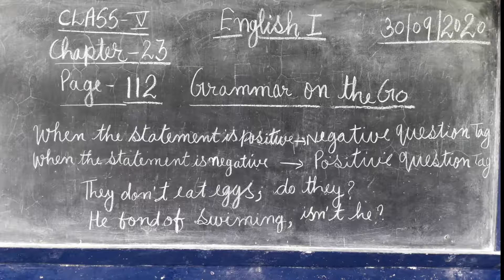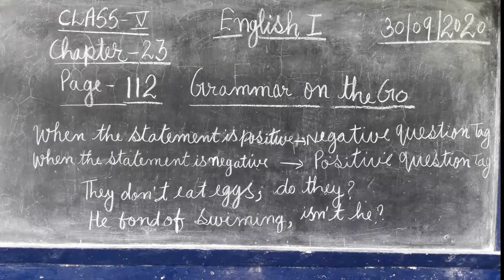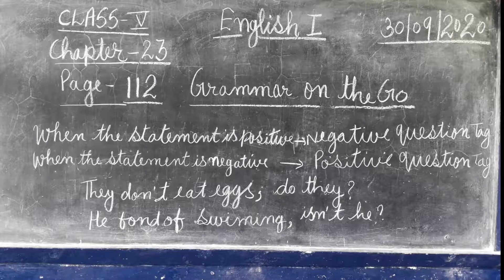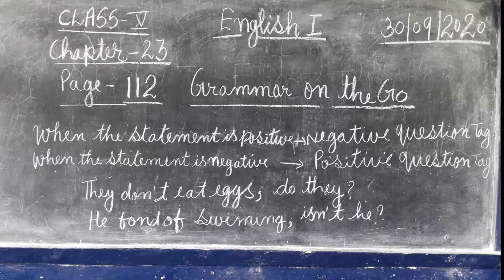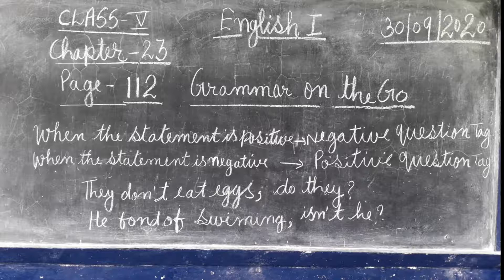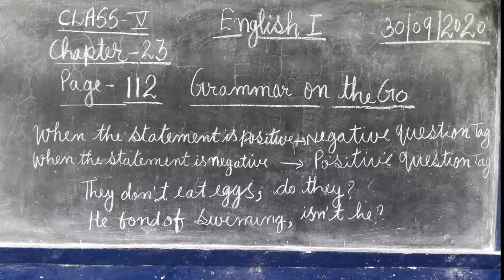We form question tags using the helping word from the sentence and the subject pronoun. For example: 'That kite is yours, isn't it?' 'The sun rises in the east, doesn't it?' 'They are not drinking tea, are they?' These are examples of question tags.